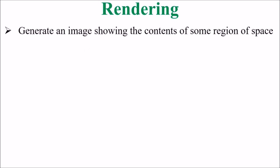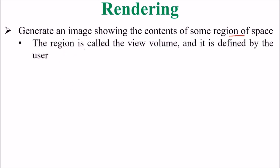So what are the steps in 3D Graphic Rendering? First we generate an image showing the contents of some region of space. The region is called the view volume and it is defined by the user.